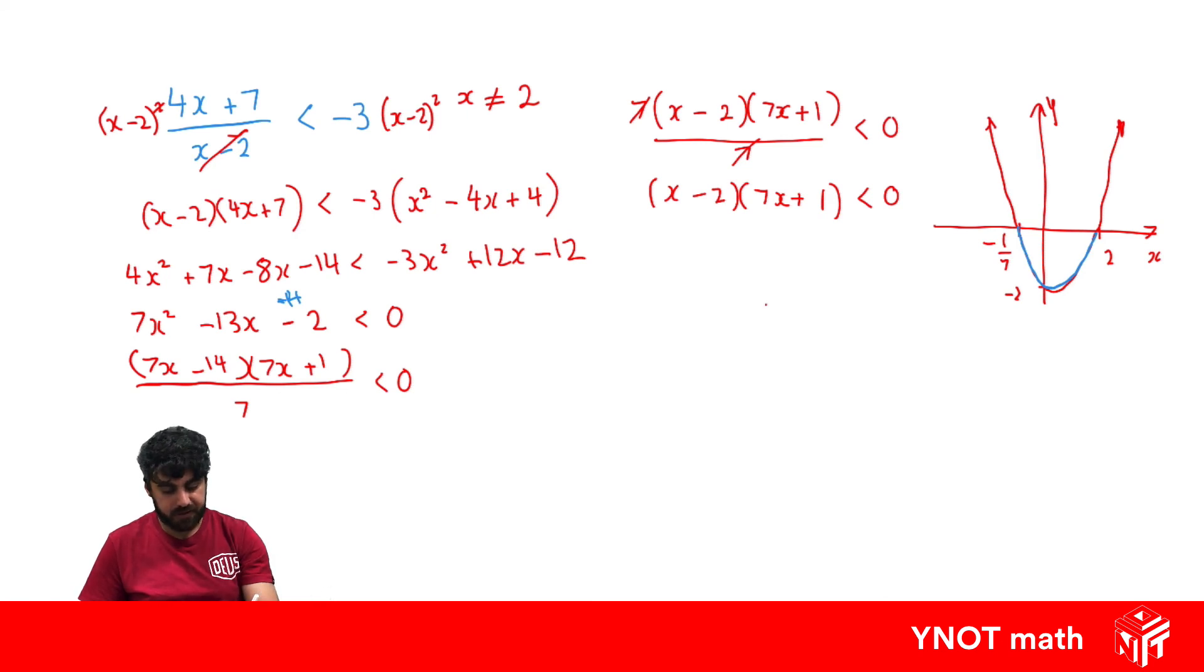So we can go ahead and say that x has to be between minus 1 over 7 and 2. And we have no problem worrying about our initial x can't equal 2 because it's only less than 2, not equal to it.